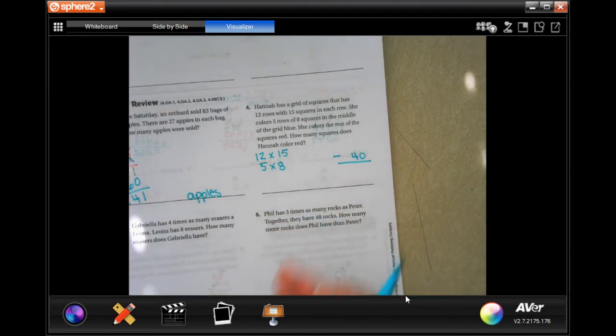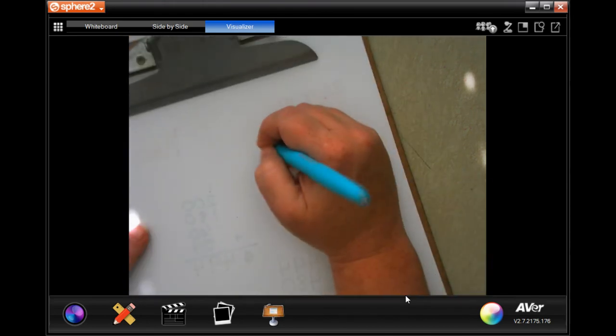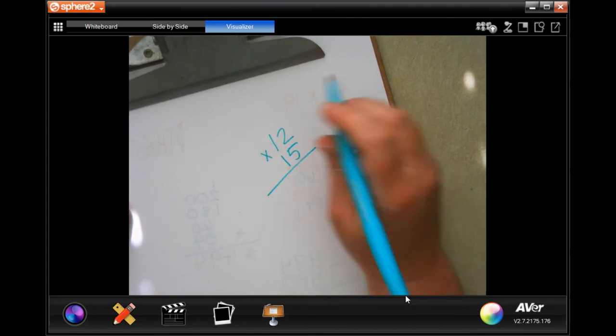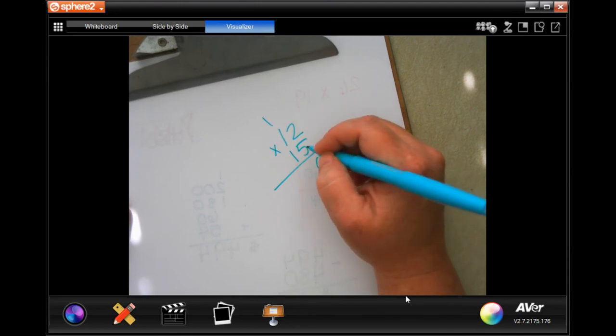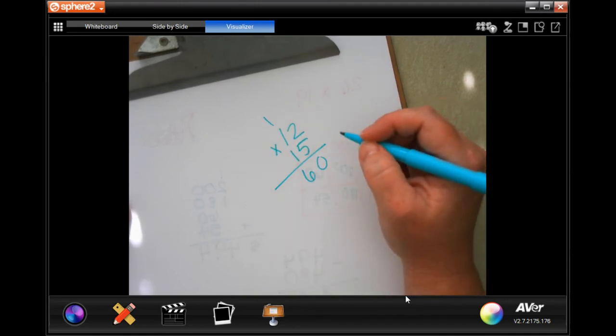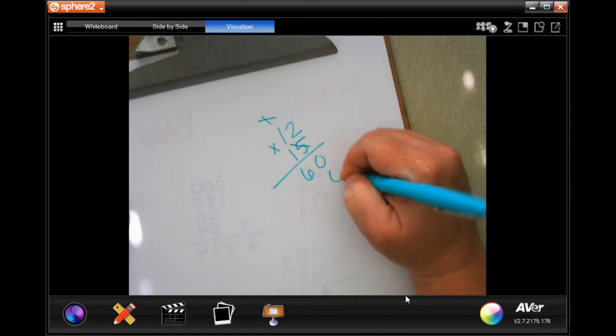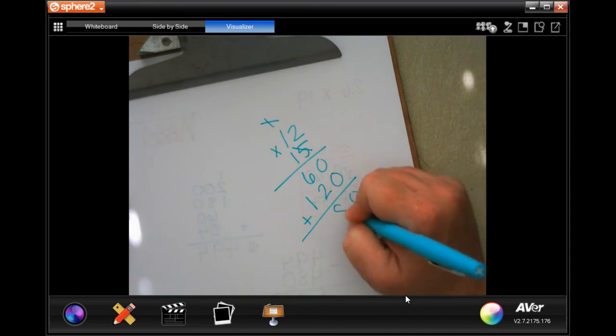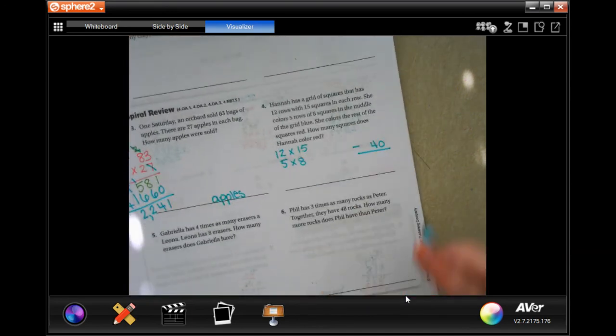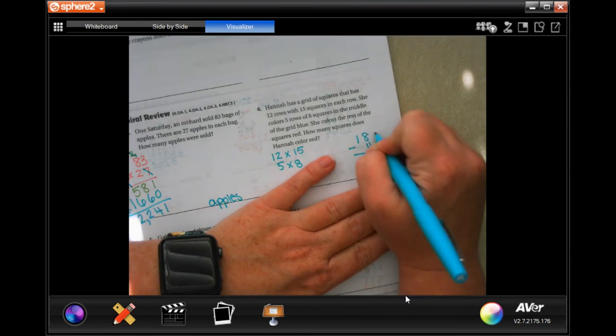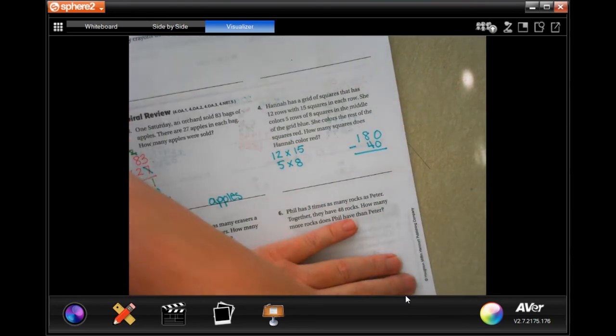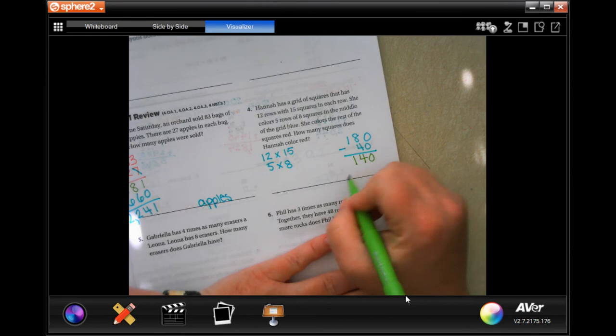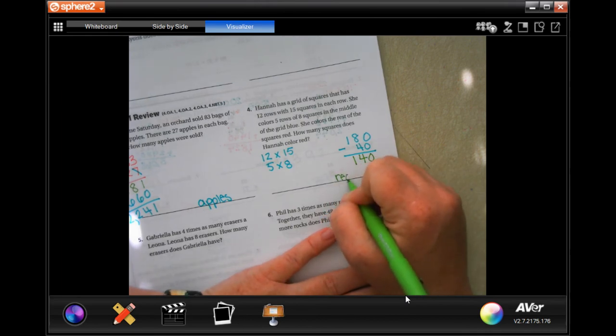So I know that my bottom number is going to be 40, because I know that 5 times 8 is 40. 12 times 15, I'm going to go ahead and do that on scratch paper, because I don't know that off the top of my head. 5 times 2 is 10, carry our 1. 5 times 1 is 5, plus 1 is 6. Tic-tac-toe, and then 1 times 12 is 12. Add those up. 0, 8, 180. So now, I'm going to have 180 minus 40. I'm going to subtract. 0, 4, 1. 140 red squares.